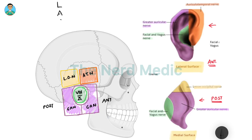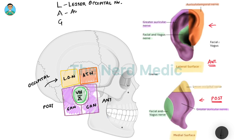Now, how do we remember them? The mnemonic for the nerves on the periphery is LAG — LAG — LAG. L stands for lesser occipital nerve. You can remember that by noting this nerve is closer to the occipital bone. Then A stands for auriculotemporal nerve.